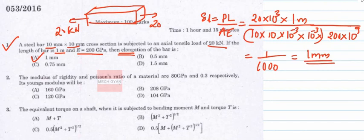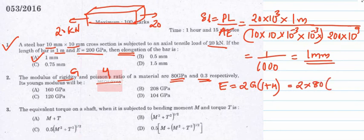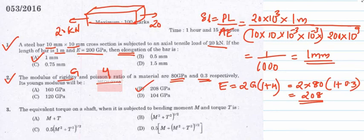Question 2: The modulus of rigidity G = 80 GPa and Poisson's ratio μ = 0.3. Young's modulus E = 2G(1 + μ) = 2 × 80 × (1 + 0.3) = 208 GPa. The answer is option B.